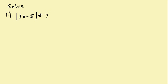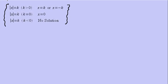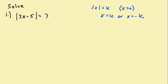Here we have the absolute value of 3x minus 5 equals 7. The property we're going to use is the absolute value of x equals k when k is positive — k is greater than zero. An equivalent equation would be x equals k or x equals negative k. So we take what's inside the absolute value, 3x minus 5, and set it equal to k, which in this case is 7.